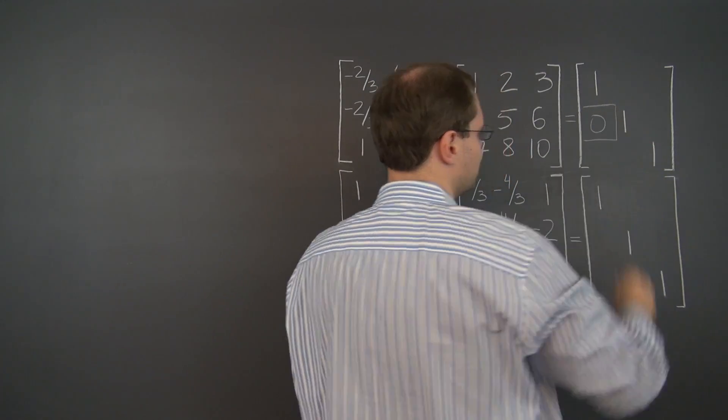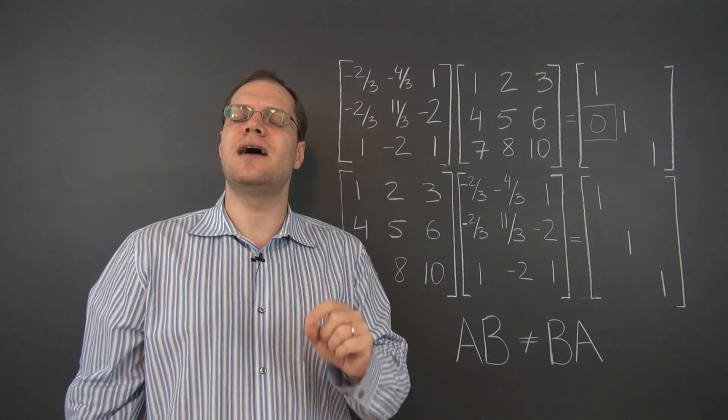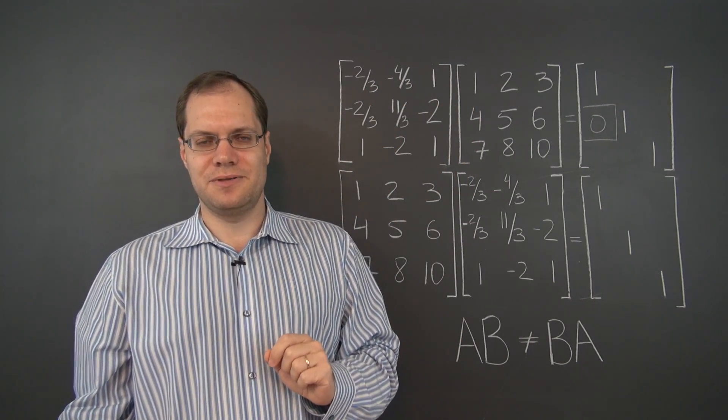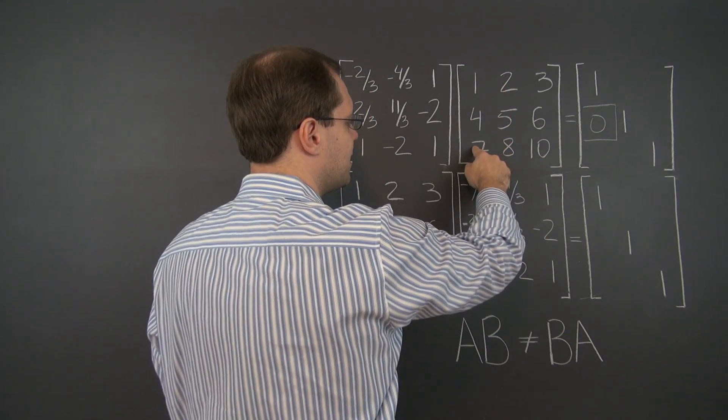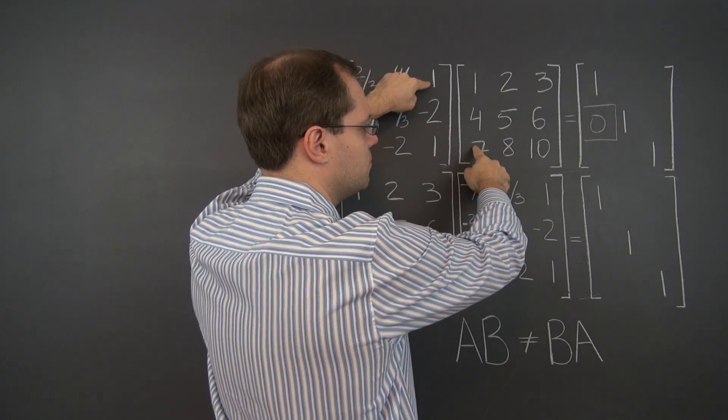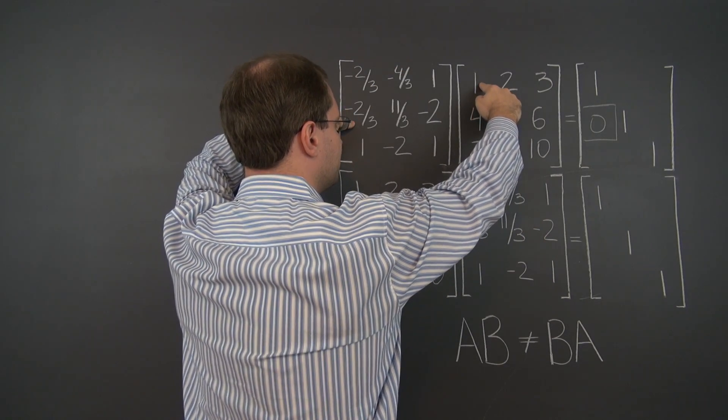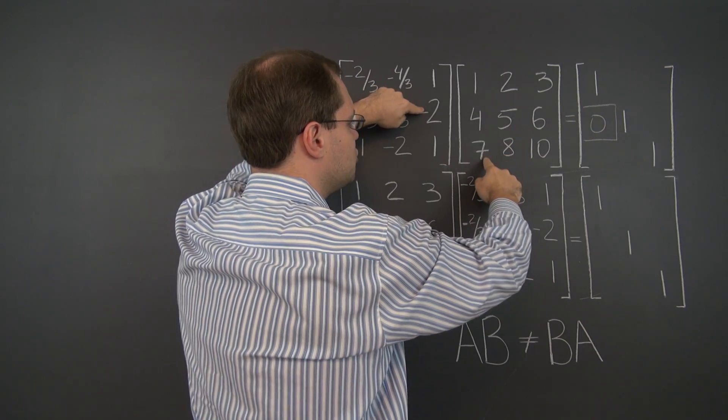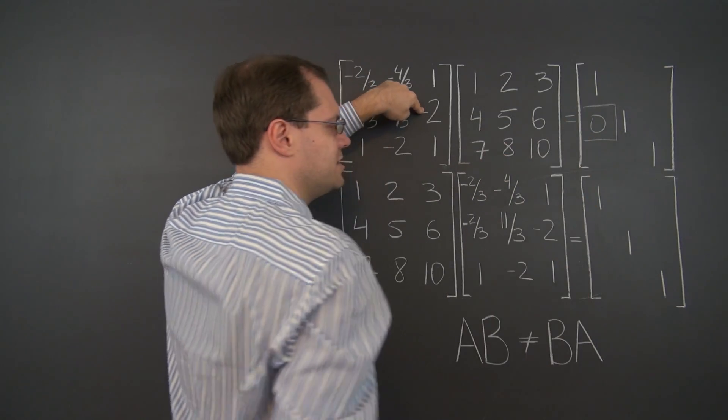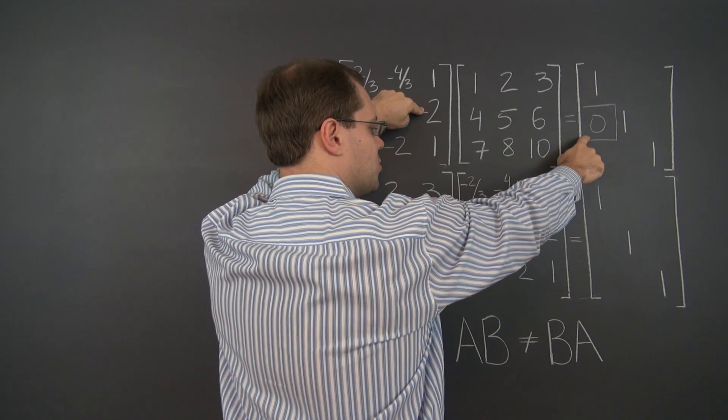Let's consider this zero and let's take the dot product perspective on matrix multiplication. This entry is the dot product of this column and this row. So negative two-thirds times one plus eleven-thirds times four minus two times seven equals zero. That's where this zero comes from.